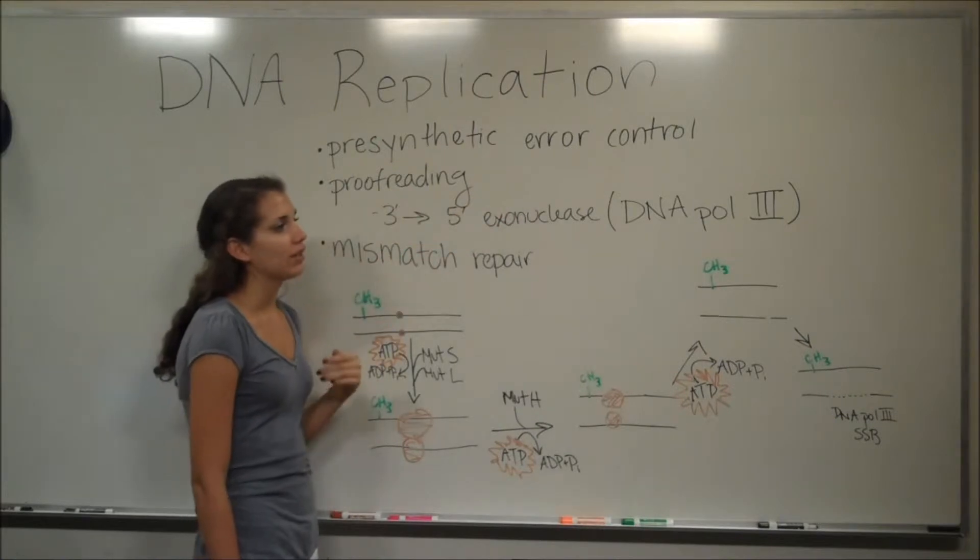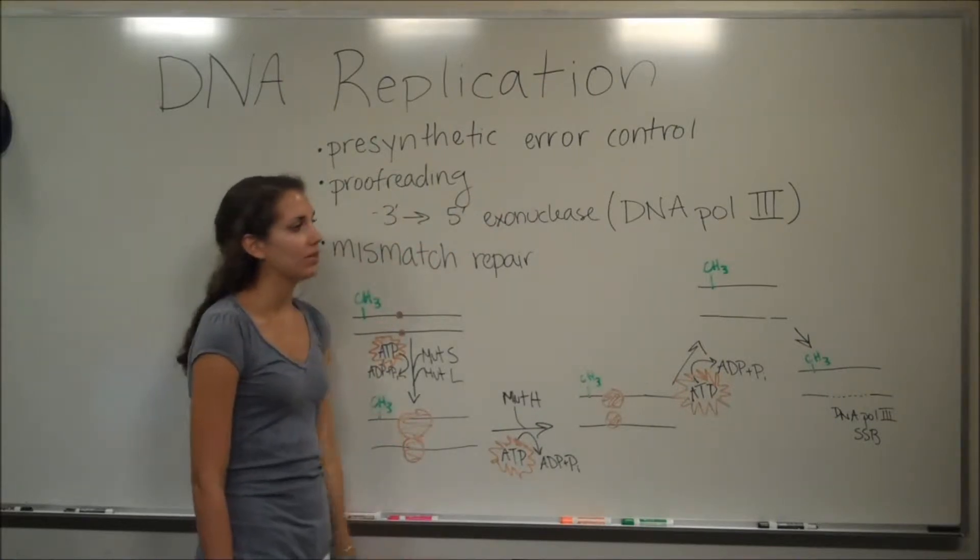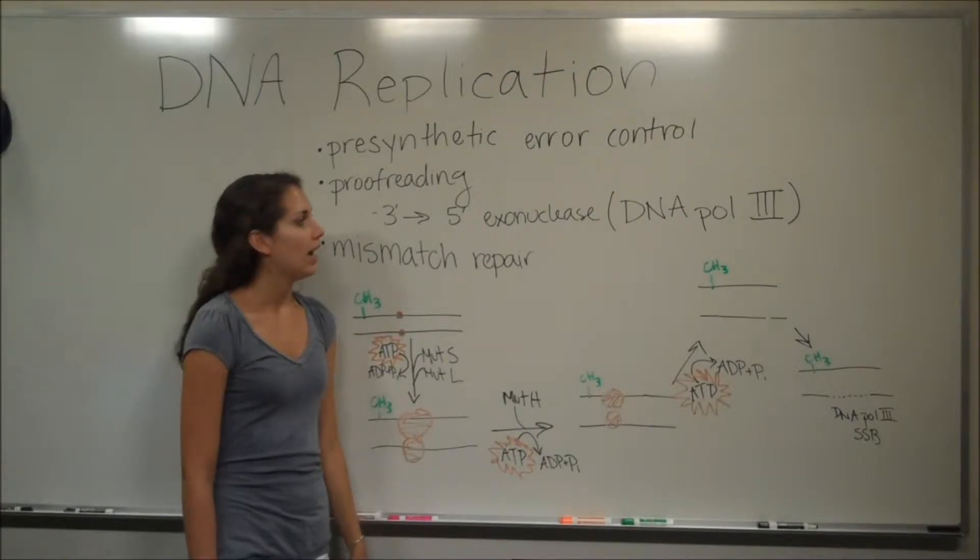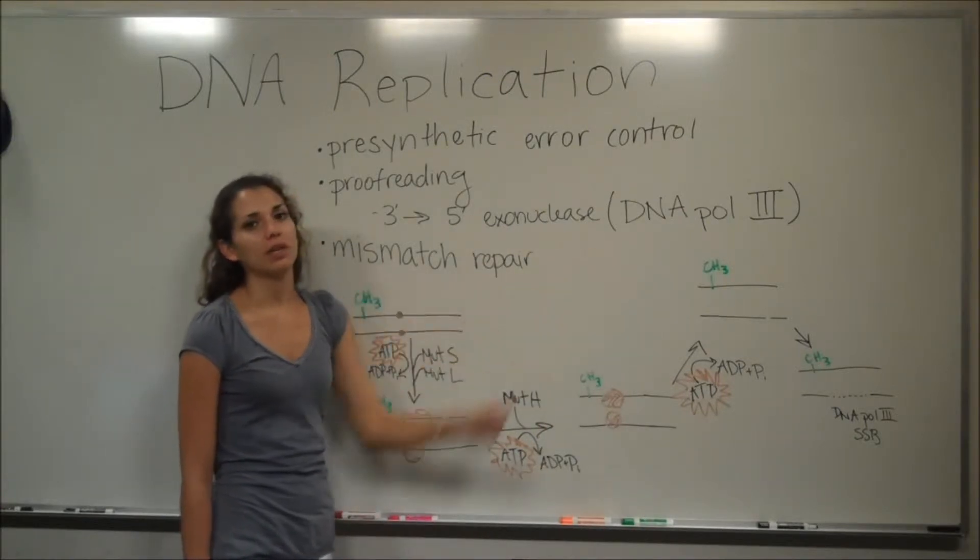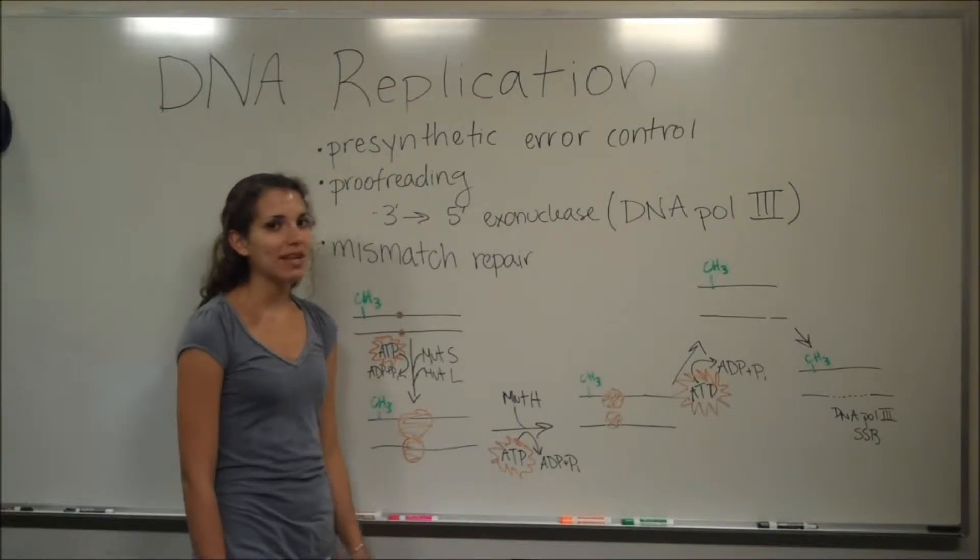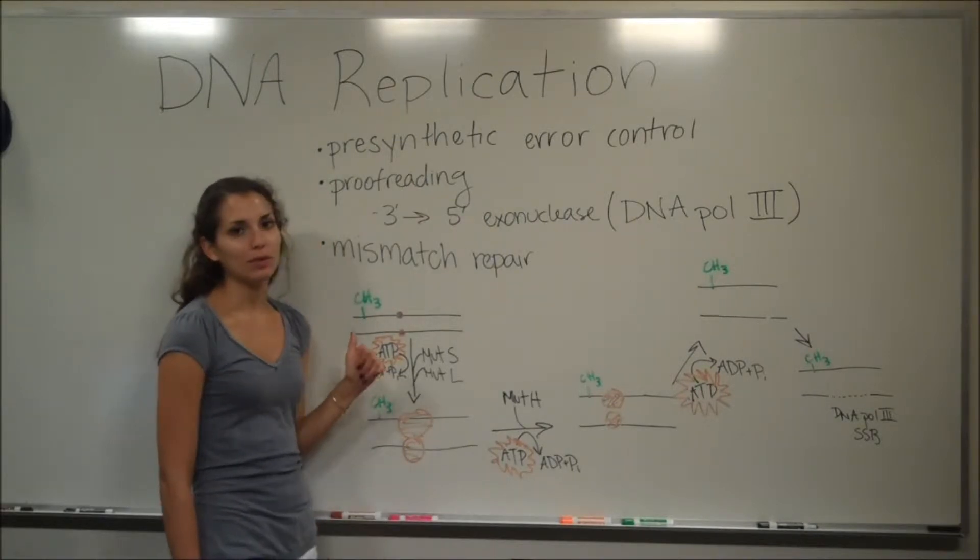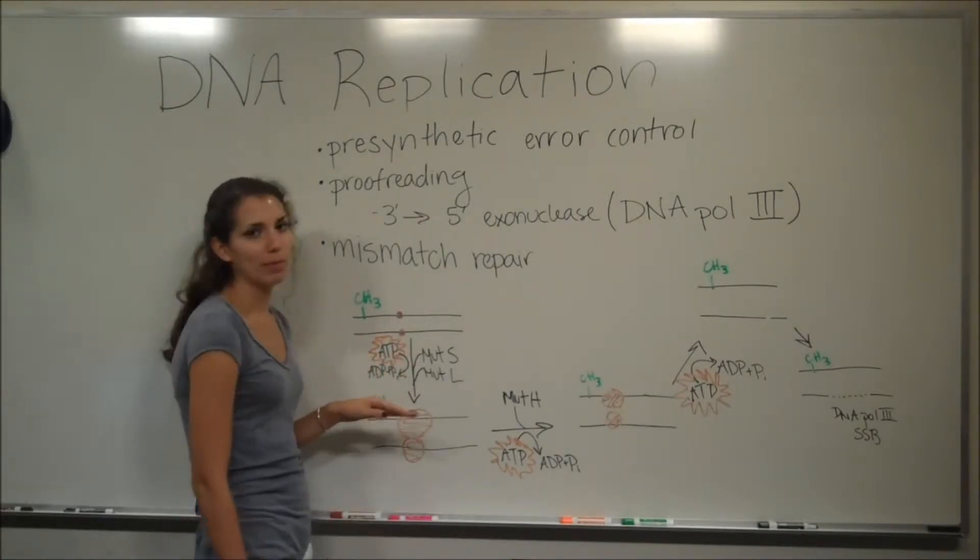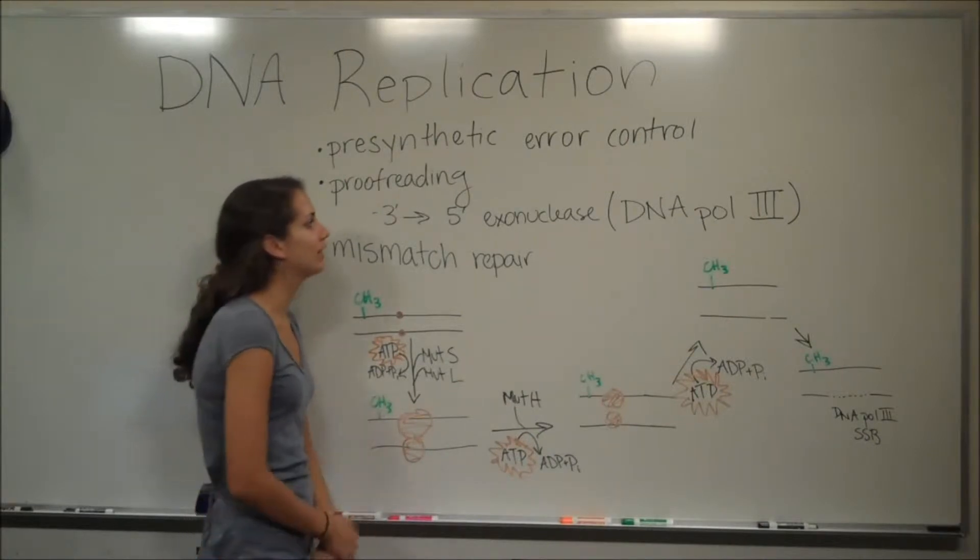There's proofreading, and this relates to the three prime to five prime exonuclease activity of DNA polymerase 3 that I described. Again, I think this is really important. I think I got a question wrong on my exam last year because I didn't think it was important to memorize this. So memorize it. Probably it's good for at least one point.